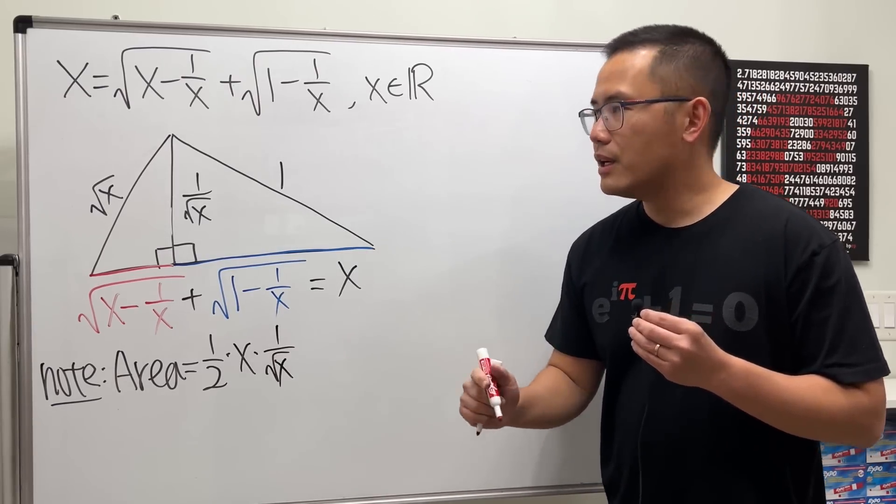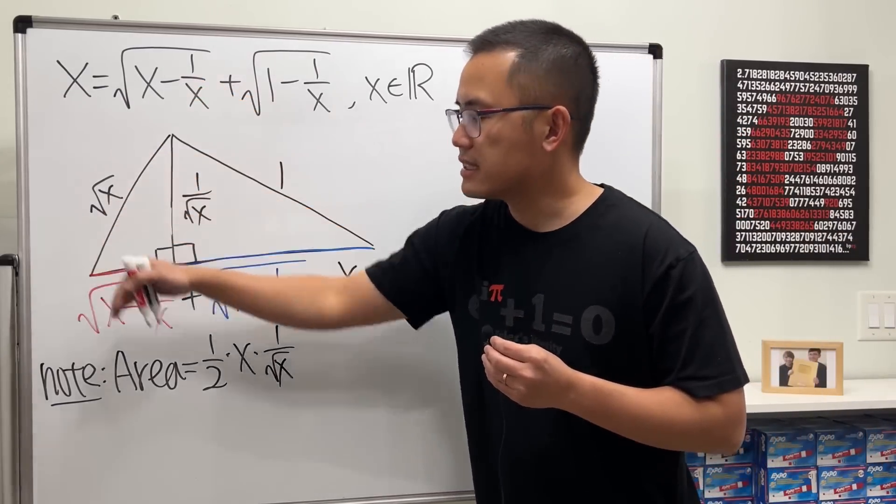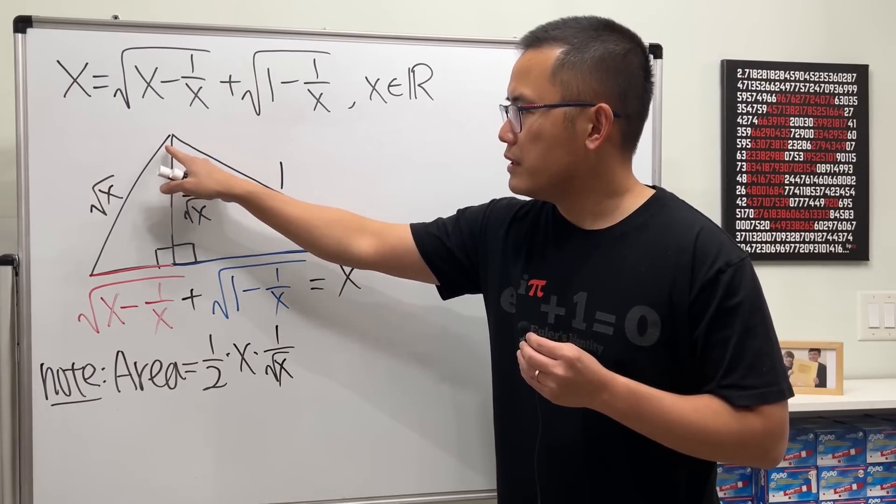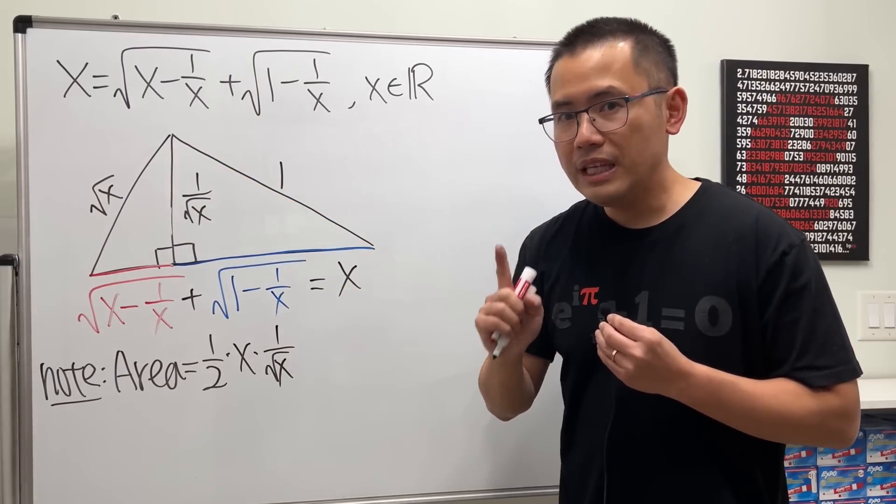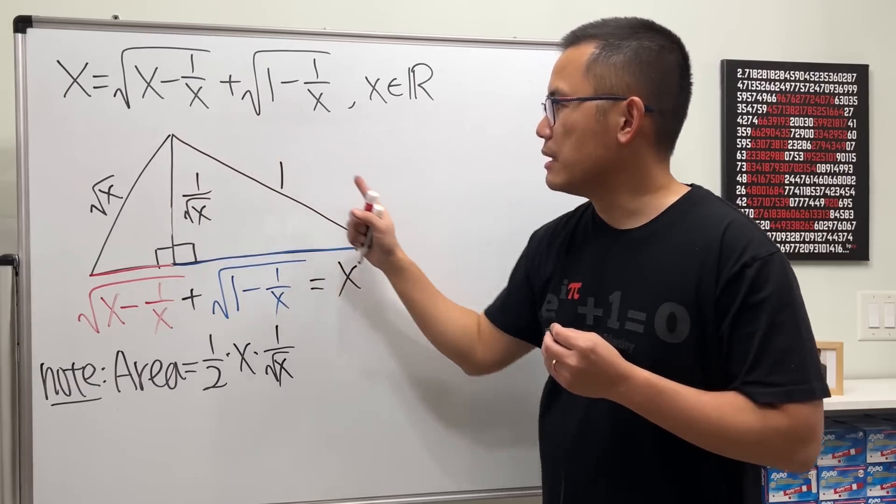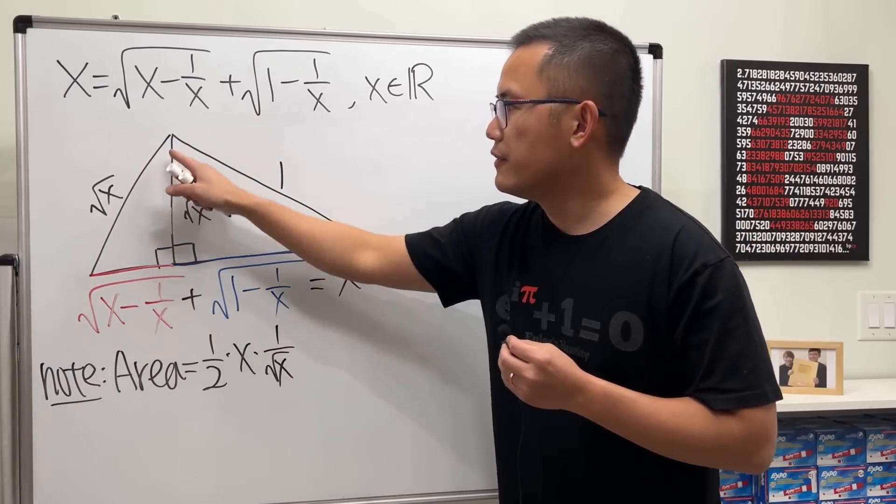But what if we look at this side and that side? I don't know if this is the 90 degree angle yet. However, if we can say that this is the base and this is the height, then for sure that has to be 90 degrees.